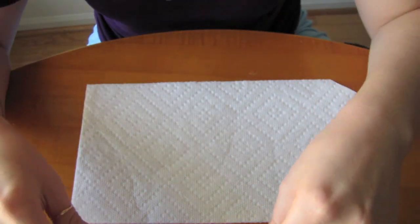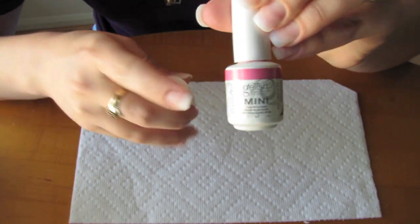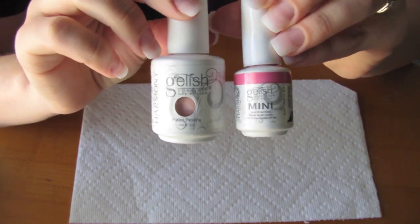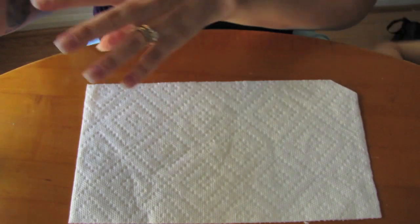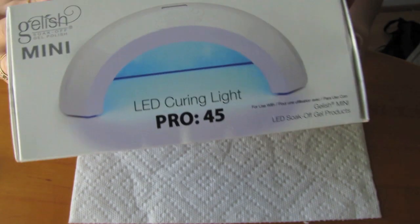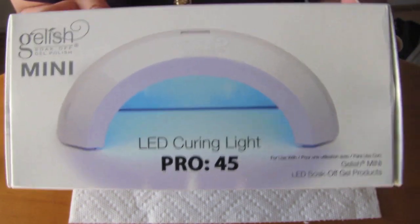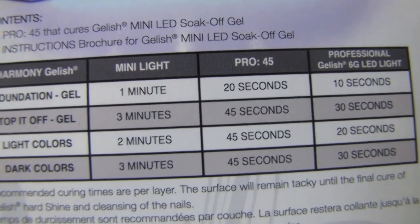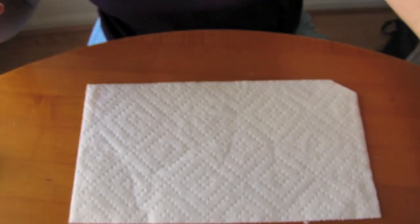I also wanted to show you the difference between the sizes. This is the Mini that they sell at Sally's and this is the regular size that you can buy off Amazon. You'll also need a lamp. I recently bought the Gelish Mini Pro 45 LED lamp. I also have a 36 watt UV lamp, but as you can see with the times, the LED lamp is much faster. That's why I bought the LED lamp.